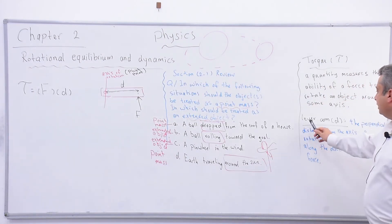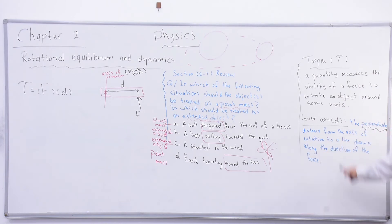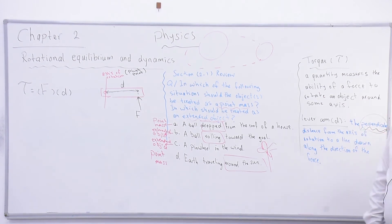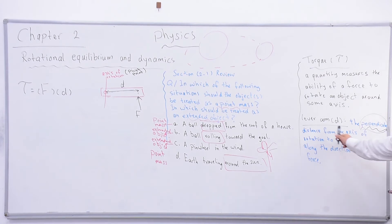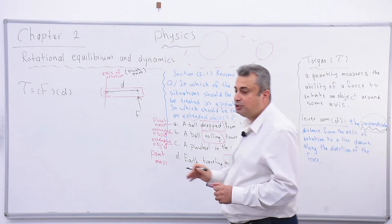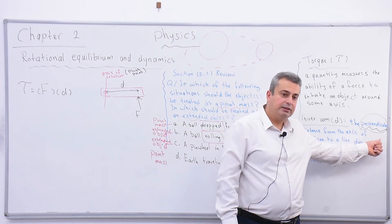We have the lever arm definition: lever arm d is the perpendicular distance from the axis of rotation to a line drawn along the direction of the force. Be careful - it is always perpendicular. From the definition, if asked about the angle between the lever arm and the force, it is always 90 degrees - it is not changing. The lever arm and the force are always perpendicular.